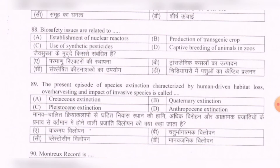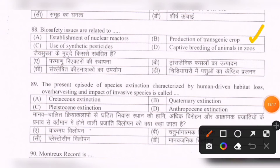Next question: Biosafety issues are related to — options are: establishment of nuclear reactors, production of transgenic crops, use of synthetic pesticides, captive breeding of animals in zoos. The correct option is B — production of transgenic crops.